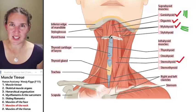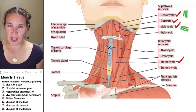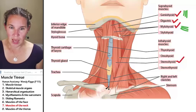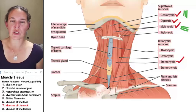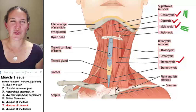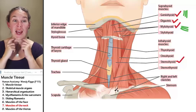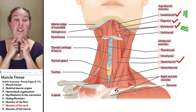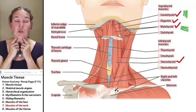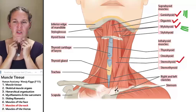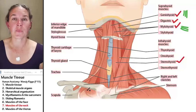Sternohyoid attaches to the hyoid and the sternum. With sternohyoid, it runs straight down. We actually have a really good example of it in George, so that one is also really straightforward.